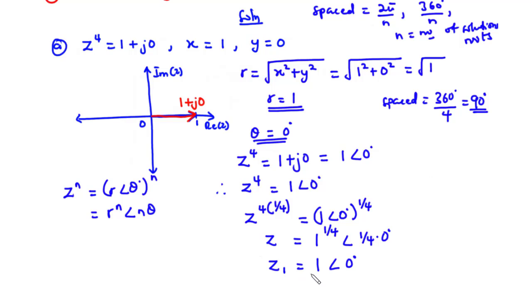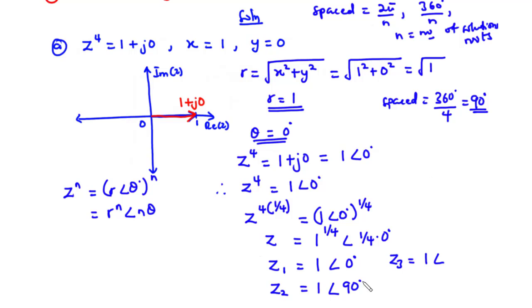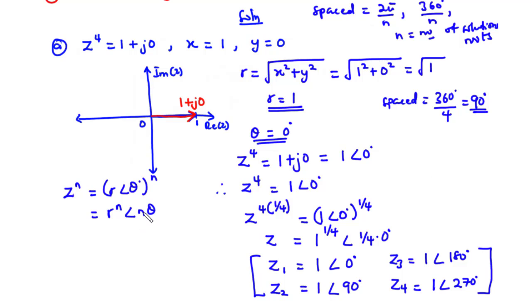If z1 equals 1∠0°, then z2 equals 1∠90°, adding 90 degrees to the angle. For z3, we add 90 to 90, giving 1∠180°. And for z4, we add 90 to 180, giving 1∠270°. Therefore, these are the four roots of the complex equation z to the power 4 equals 1.